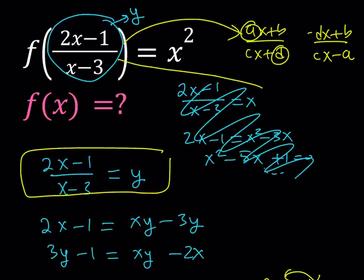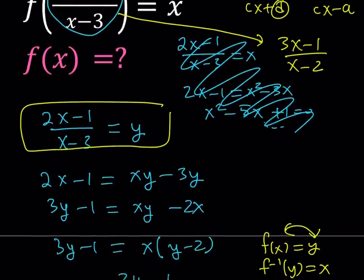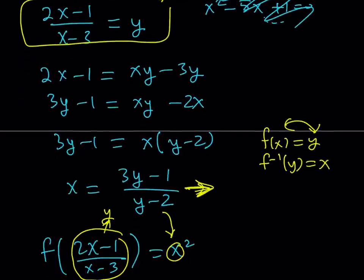By using that rule, you can safely say that the inverse of this function is going to be 3x minus 1 over x minus 2, which is pretty much what we found here.